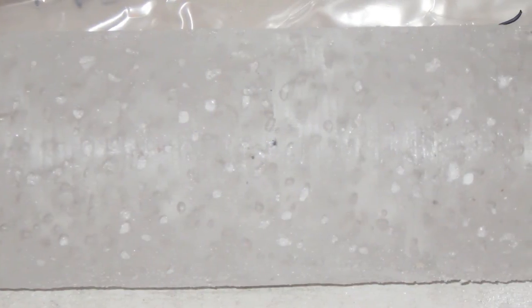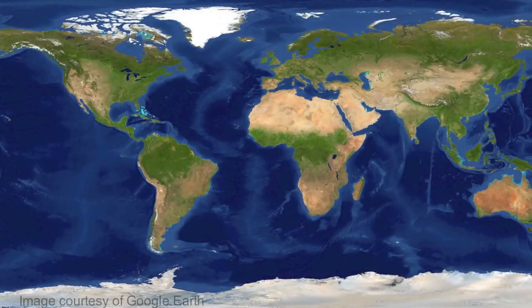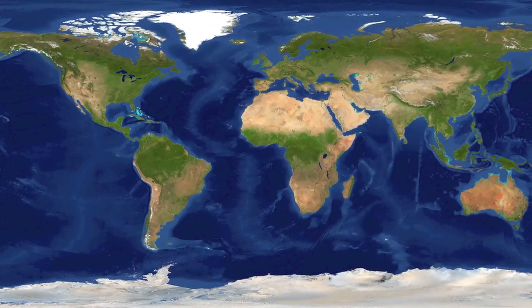Ice cores give us information as to how climate has changed for the past 800,000 years. From this data, we know that on long timescales, Earth's climate has been moderated by its orbit around the Sun. But that is not the only thing that controls Earth's climate.